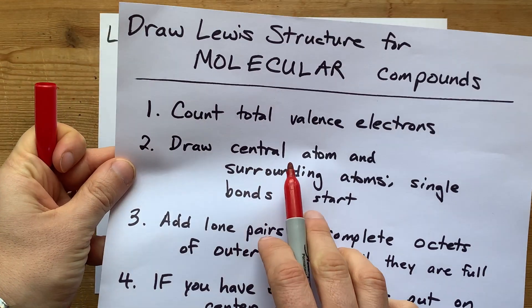Now I'm going to draw my central atom and the surrounding atoms, and I'm going to single bond them all to start. It's just three iodines. So I'm going to put an iodine in the center, and then single bond it to an iodine on either side.